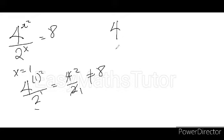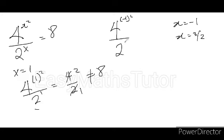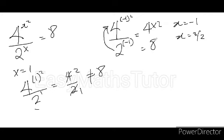Now let's test x = -1. We substitute: 4 raised to power (-1)², over 2 raised to power -1. Minus 1 squared is 1, so we get 4 raised to power 1, times 2 raised to power 1 (since 2^(-1) jumps to the numerator), giving 4 times 2 = 8. That is correct.